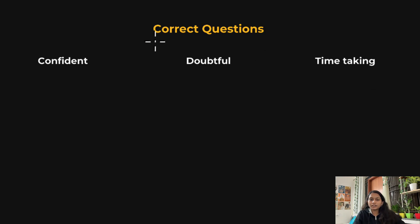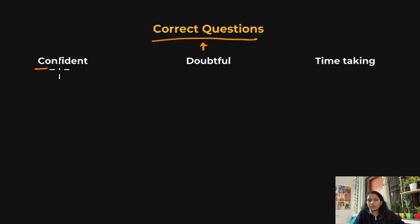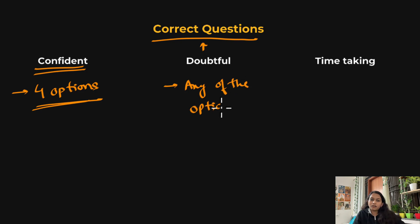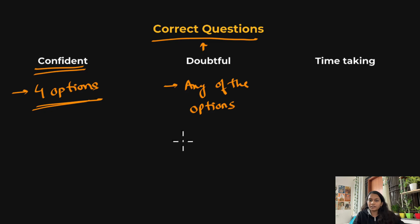After a mock test, look at your correct questions. Within these, there are categories: questions you are fully confident about, and questions where you have some doubt. If you are confident in all four options, you don't need to do anything. But in MSQ-type questions, you might be confident about three options but doubtful about one — in that case, you have to check the concept behind that option.